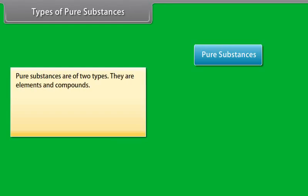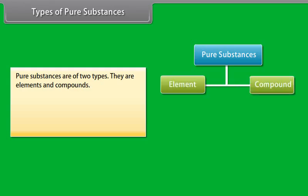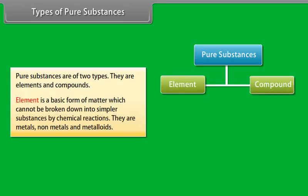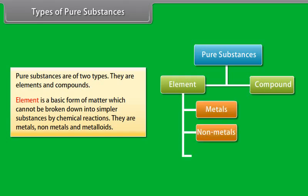Types of pure substances. Pure substances are of two types: elements and compounds. Element is a basic form of matter which cannot be broken down into simpler substances by chemical reactions. They are metals, non-metals, and metalloids.